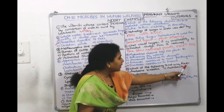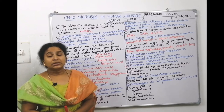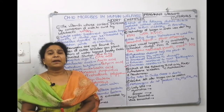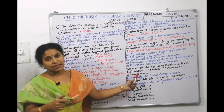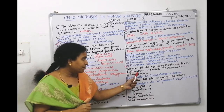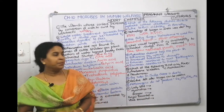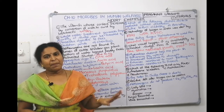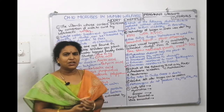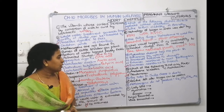Thirteenth question: which of the following is not a nitrogen fixer? Anabaena and Nostoc are cyanobacteria that do nitrogen fixation. Acetobacter is a bacteria with nitrogen-fixing ability. Pseudomonas is a bacteria but does not have nitrogen-fixing ability — Pseudomonas putida is known as a 'superbug' for clearing oil spills. So pseudomonas is not a nitrogen fixer.